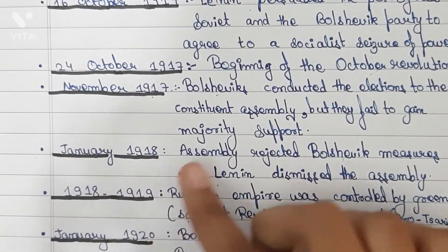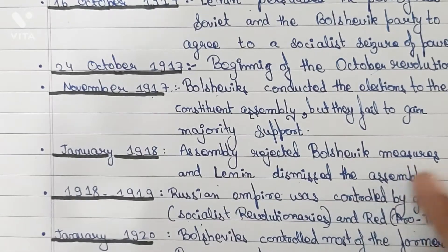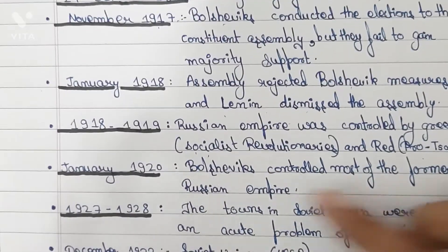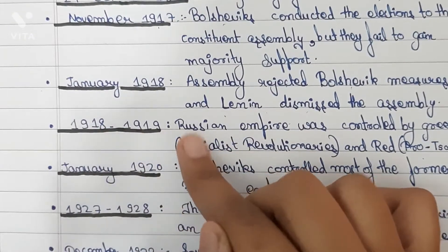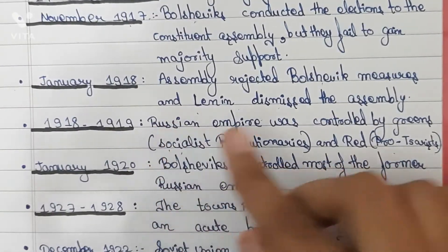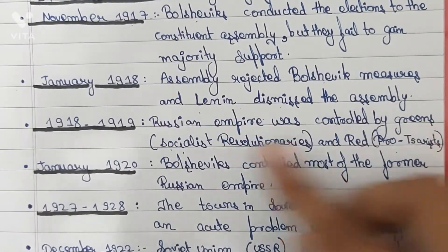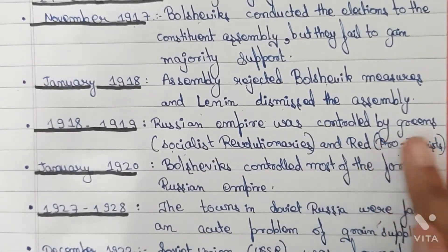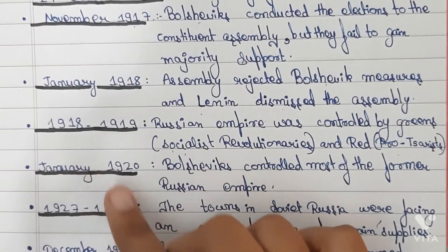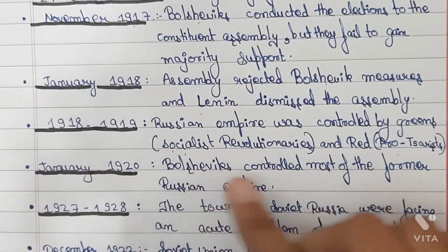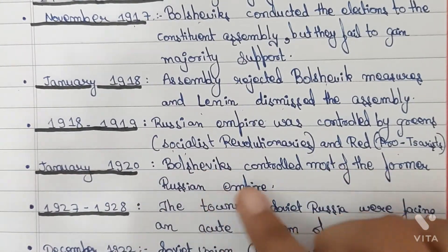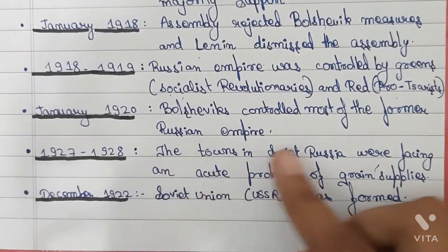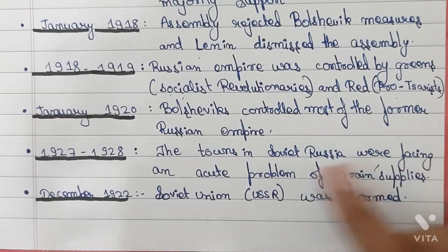January 1918: the Assembly rejected Bolshevik measures and Lenin dismissed the Assembly. 1918 to 1919: the Russian Empire was controlled by the Greens, who were the Socialist Revolutionaries, and the Reds, who were the pro-Czarists. January 1920: the Bolsheviks controlled most of the former Russian Empire.